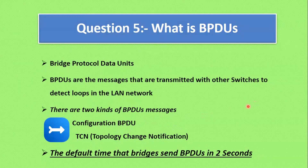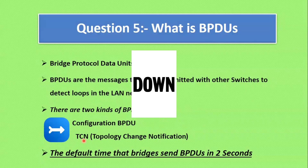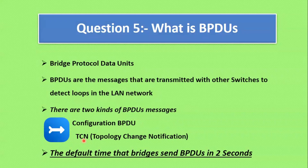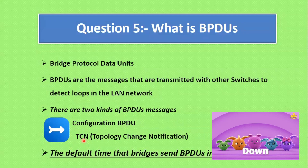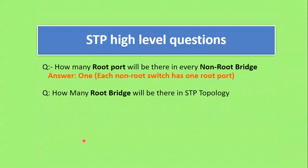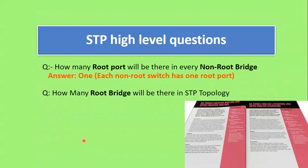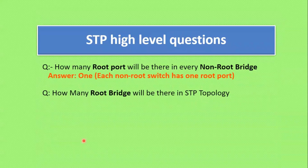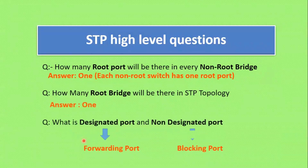Configuration BPDUs are sent by the root bridge to provide information to all switches. The root bridge is the master switch and it shares configuration to non-root bridges using configuration BPDUs. TCN (Topology Change Notification) is sent by a non-root bridge toward the root bridge to notify changes in the topology when a switch interface goes up or down. This is a high-level STP question typically asked for candidates with 5 or 6 years of experience.